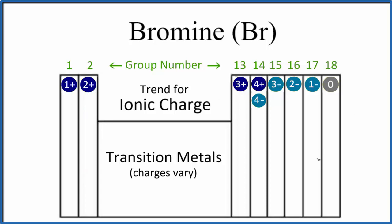Bromine is about right here on the periodic table. It's in group 17, so it'll have a 1 minus ionic charge. So when bromine forms an ion, it'll be 1 minus.